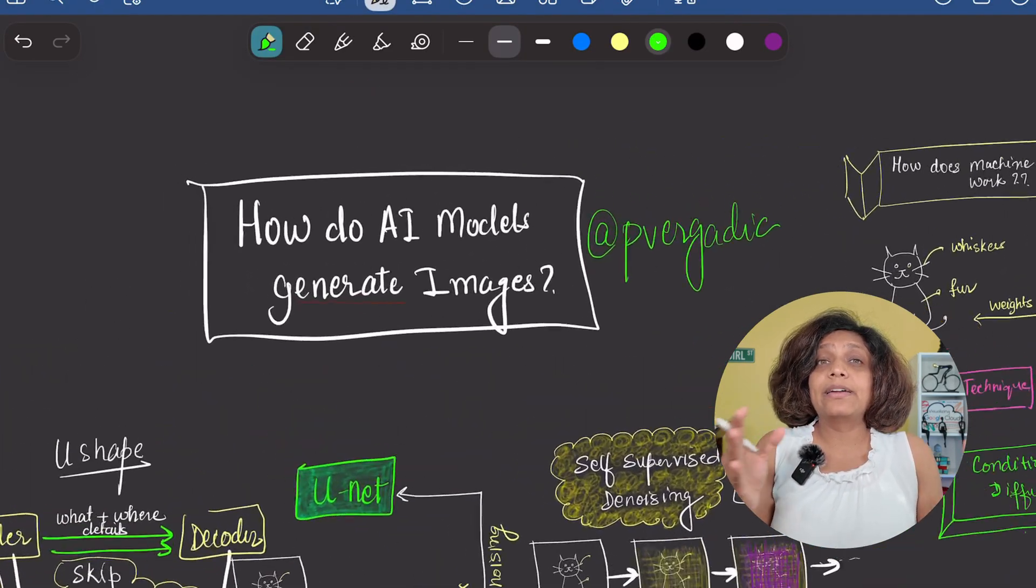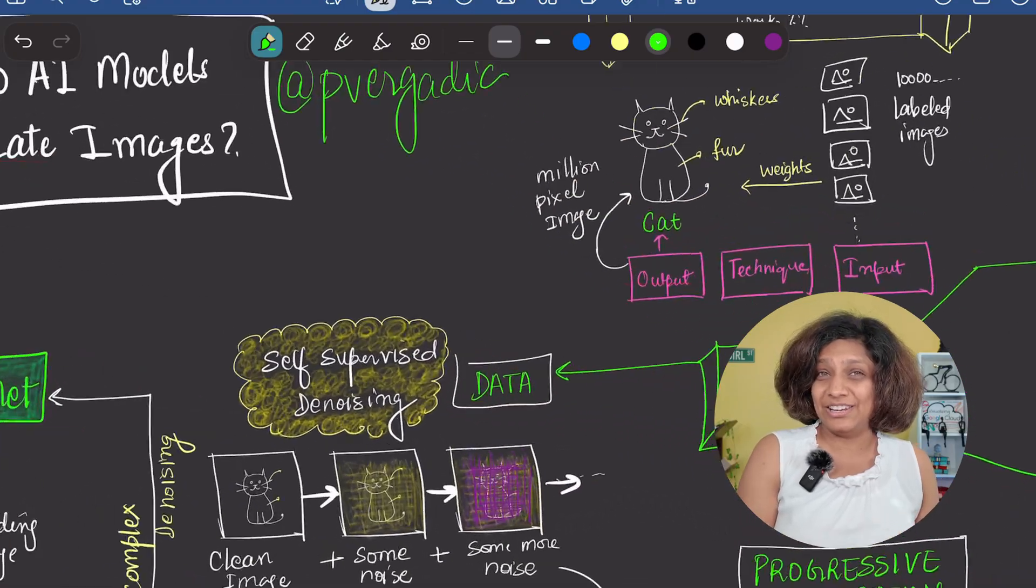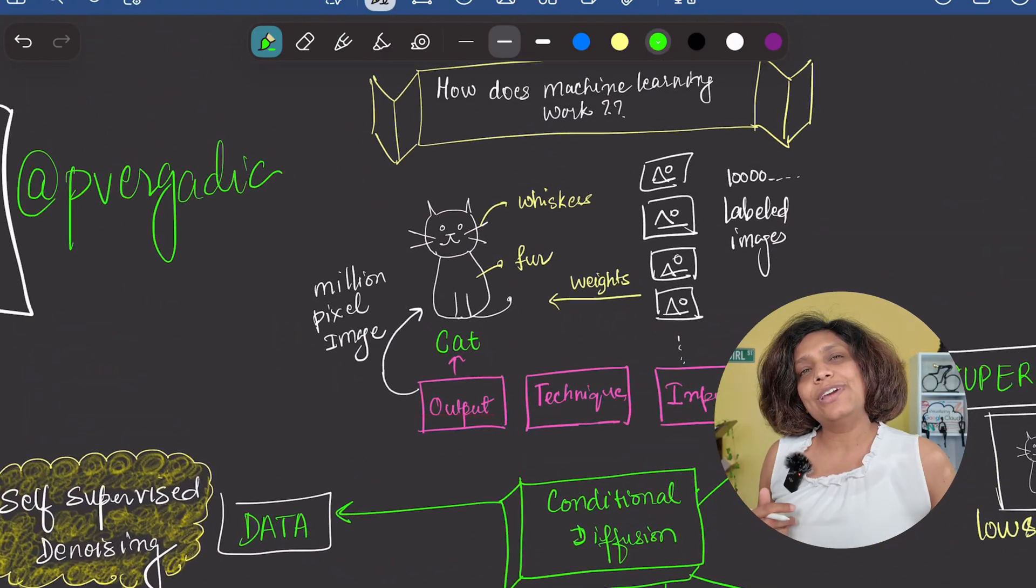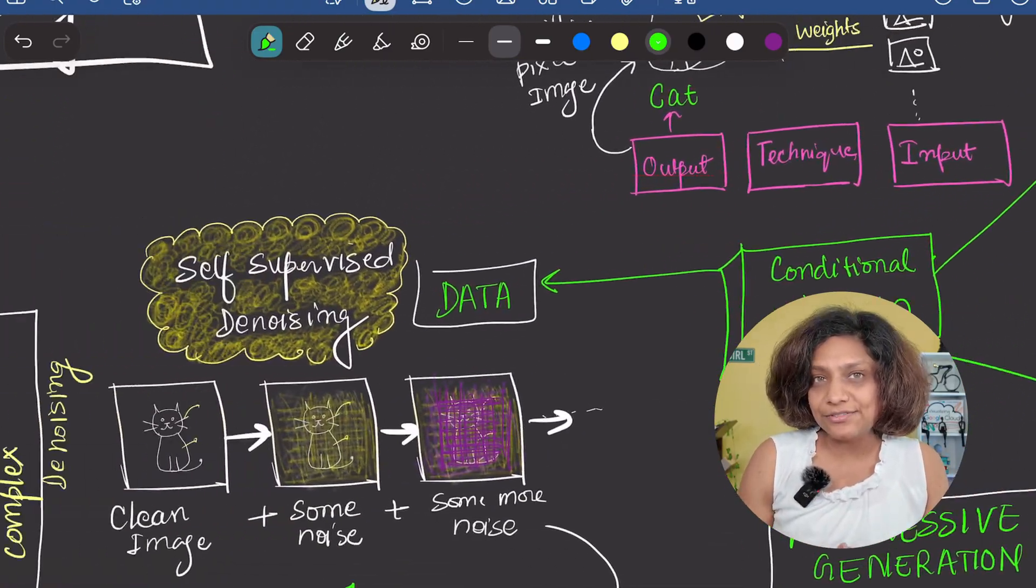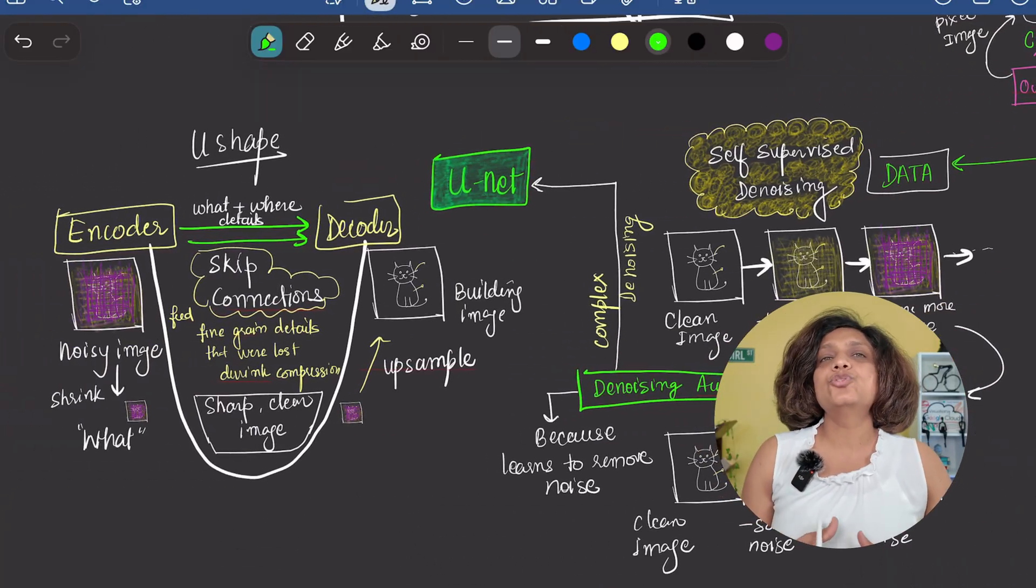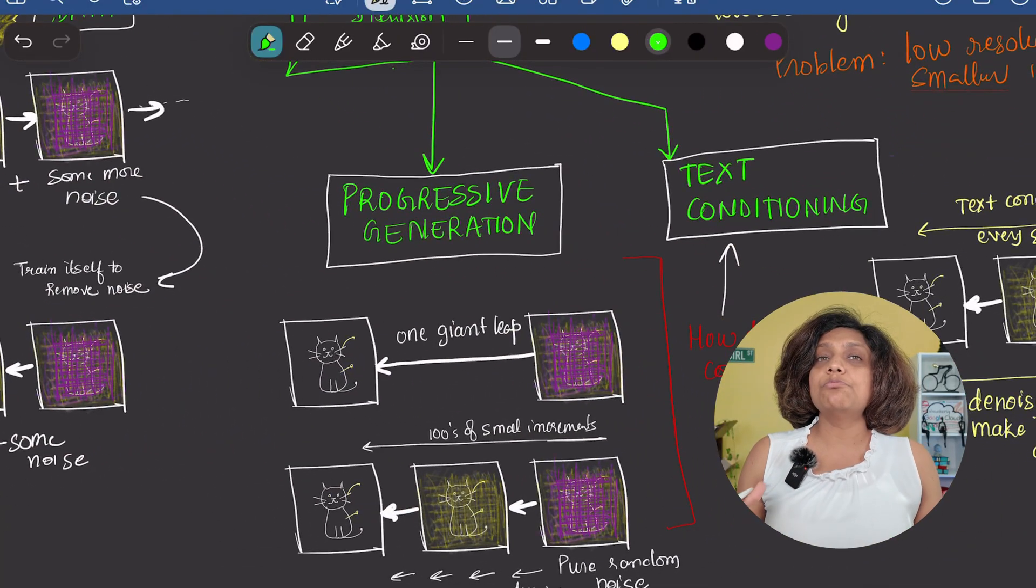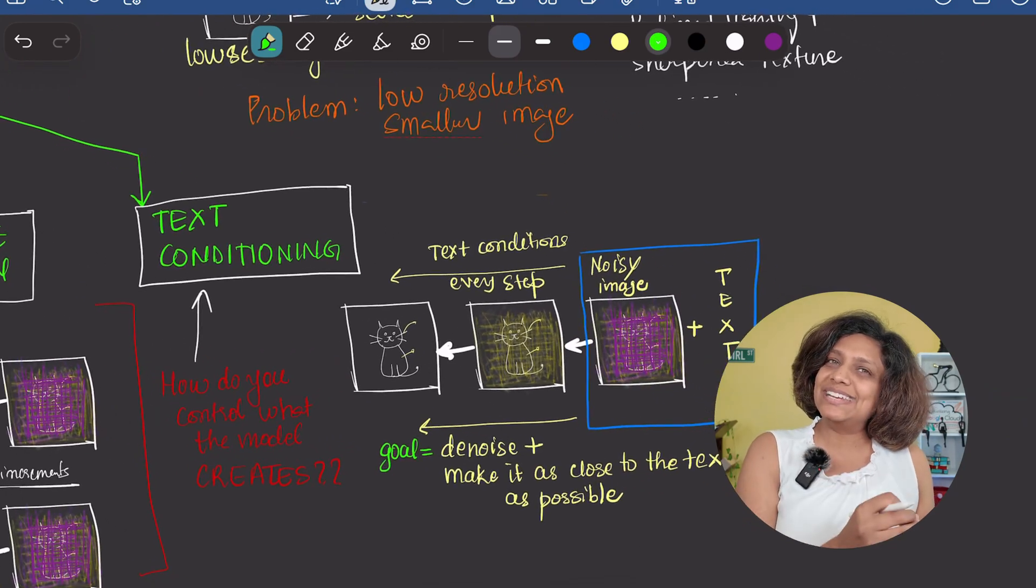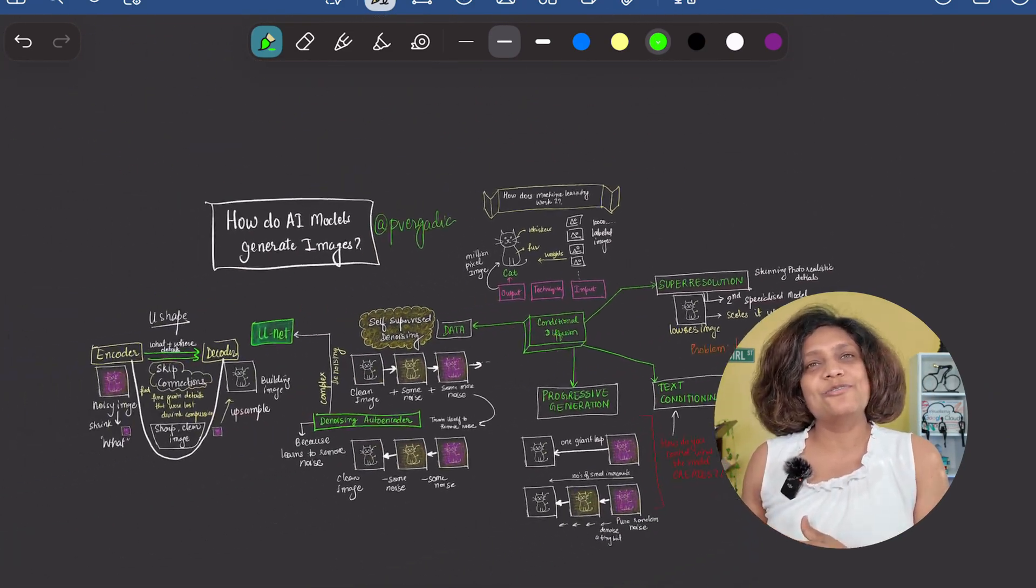And that's it. By combining self-supervised denoising, the powerful U-net architecture, progressive generation, text conditioning, and super resolution, diffusion models can turn a simple sentence into a work of art.